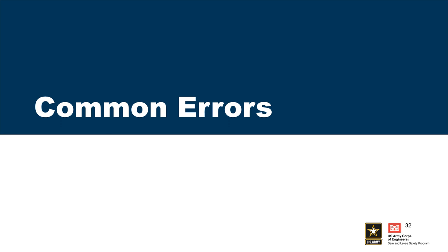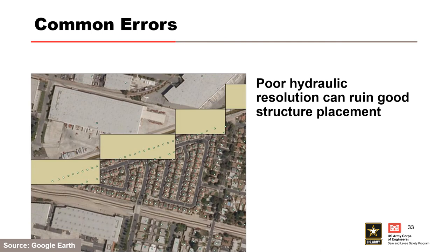Now for common errors. The NSI is not perfect. If you ever download the structure inventory, do a consequence assessment, and submit those results without reviewing the structure inventory and making adjustments, you've made a grievous error — because there are always issues with all the attributes. The first example: there's nothing wrong with the structure inventory — structures are placed perfectly on their real-life locations — but the hydraulic data is really bad quality, with very large cell sizes. The large rectangles represent a channel right next to a neighborhood, so the depths from that channel are being applied to those structures due to poor hydraulic data quality.